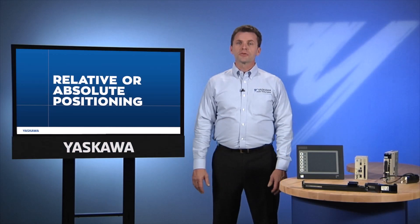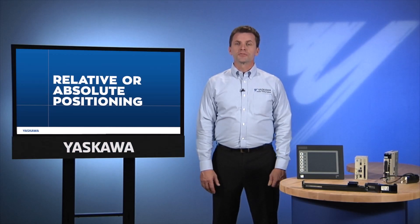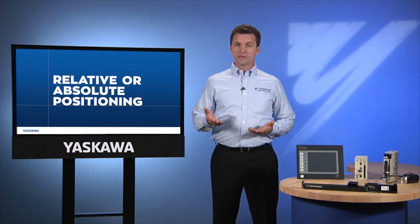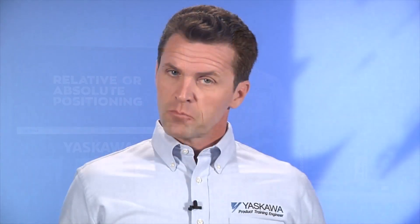Modern industrial motion controllers allow the programmer the option to define the move either relatively or absolutely, whichever makes the most sense for that particular part of the control program. For this reason, we really can't tell which method was used by simply looking at the machine in motion.